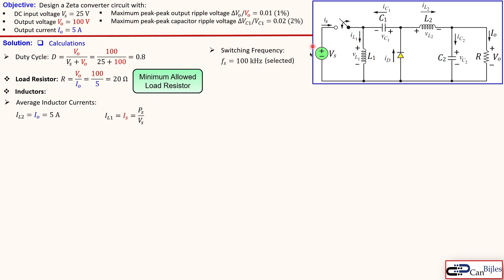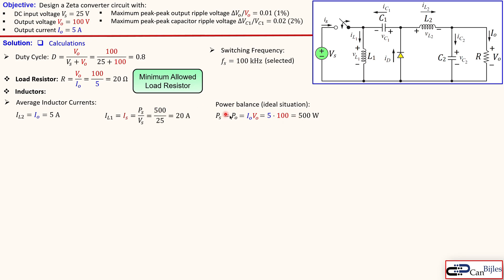The power supplied by the source is IS times VS. We need a power balance: in this ideal case the source power must equal the load power. The output power is the product of the output current and the output voltage, which is 5 times 100, or 500 watts. Since PS equals PO, that means 500 watts divided by 25 volts results in 20 amps for the average current of L1.